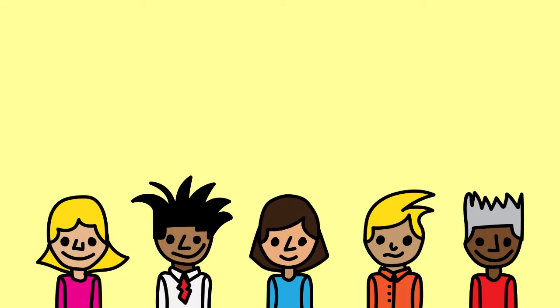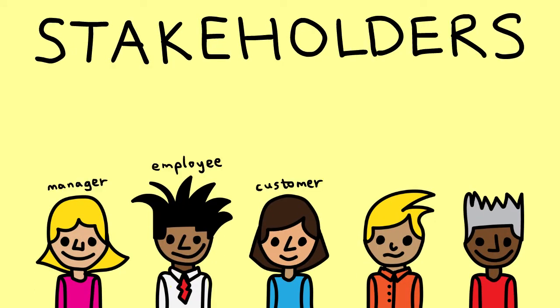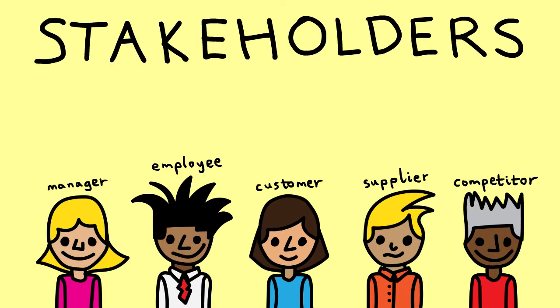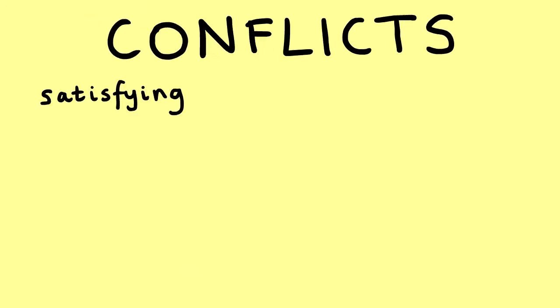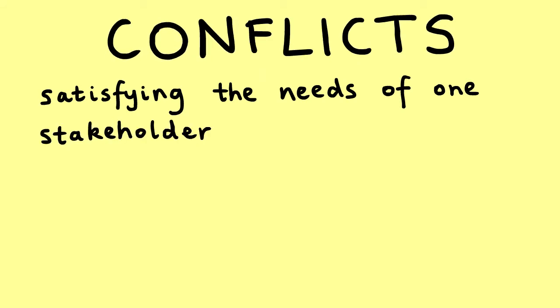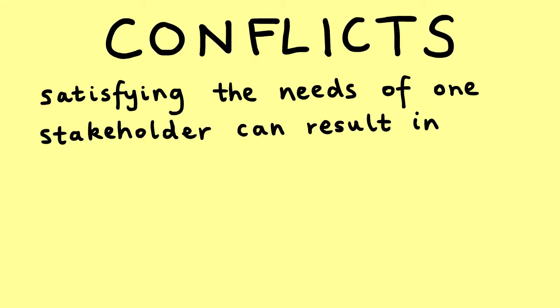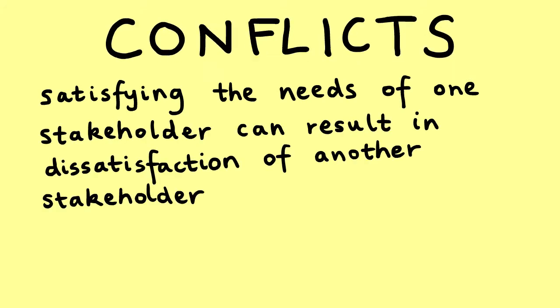Because there are so many different stakeholders in the workplace, it is difficult to satisfy everyone's needs. The reason why conflicts occur in the workplace is because satisfying the needs of one stakeholder can result in dissatisfaction of another stakeholder.